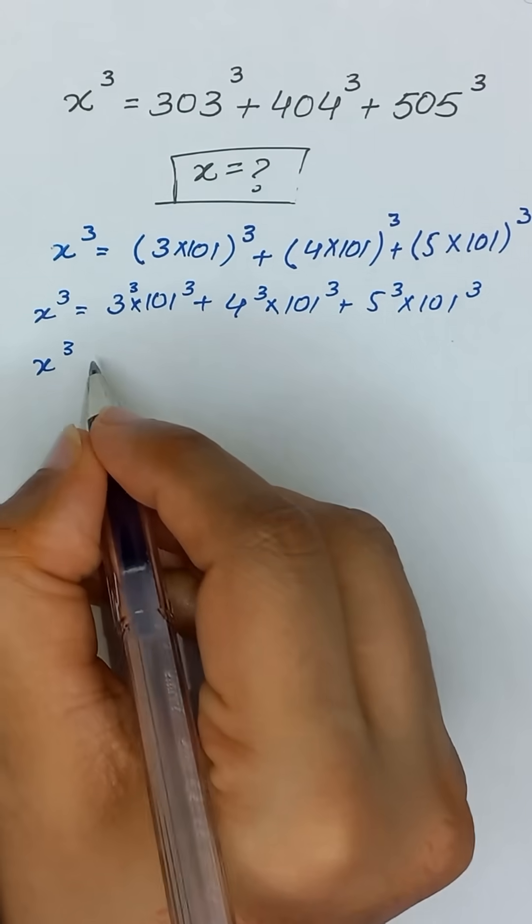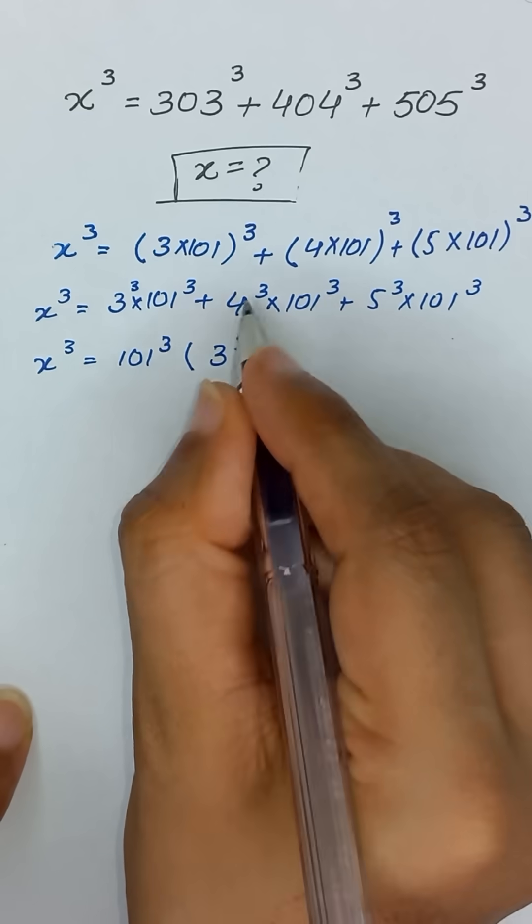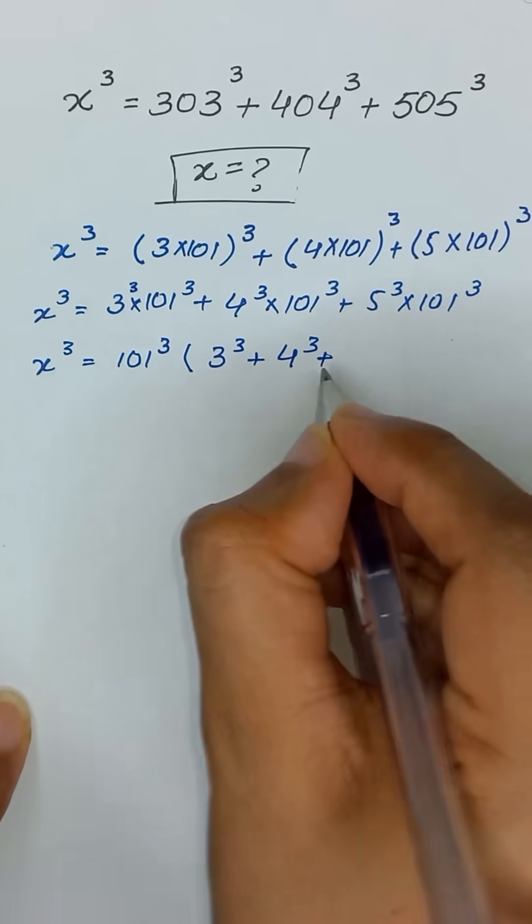Now in these three terms we have 101 cube is common. So this divided by this will be 3 cube, similarly it will become 4 cube plus 5 cube.